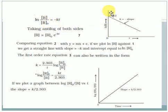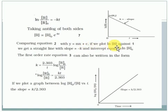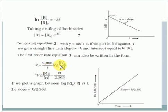If you draw a graph of ln(r/r0) against time, you get a negative slope where k is the negative slope. This equation fits the straight line form y = mx + c. Converting from natural logarithm to base 10, we multiply by 2.303, giving the equation k = 2.303/t × log(r0/r). This is the standard integrated rate law for first-order reactions.